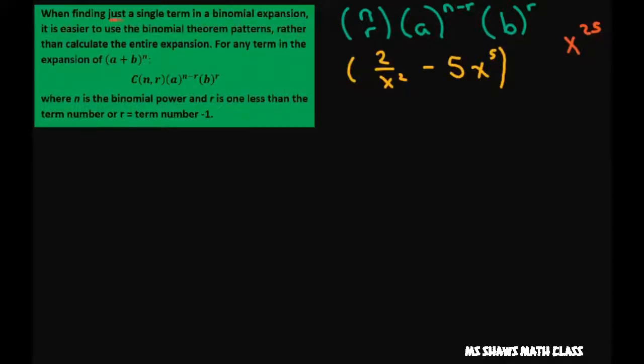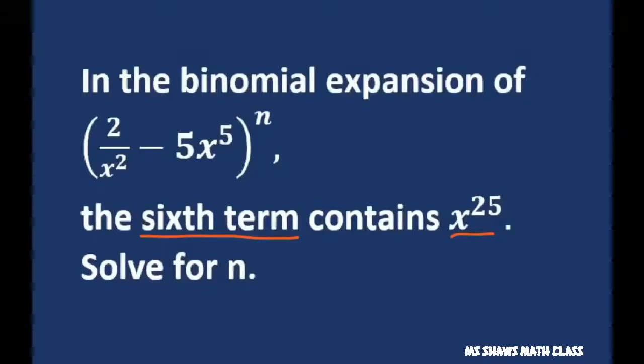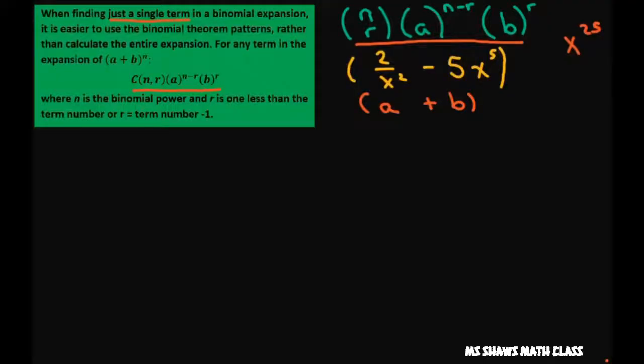So basically when we're just trying to find a single term, we're going to use this formula. Given this is our a, this is our b, and our n is... we don't know. So we don't know our n.